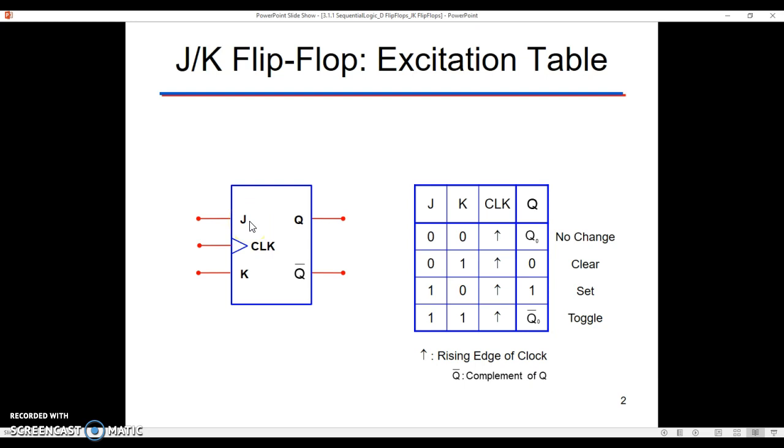In the last one, if D was on, Q was going to be on. If D was off, Q was going to be off. We're pretty limited in what we can do here. The JK flip-flop has two inputs on the left-hand side that determine its behavior. The J input and the K input.